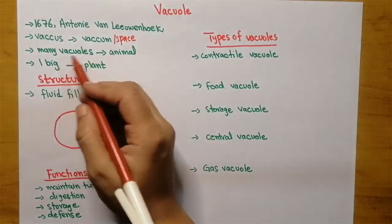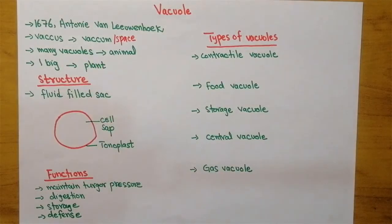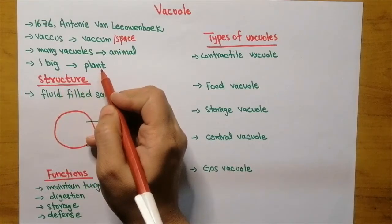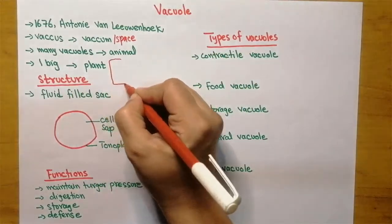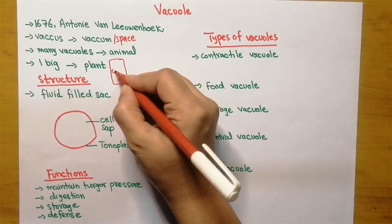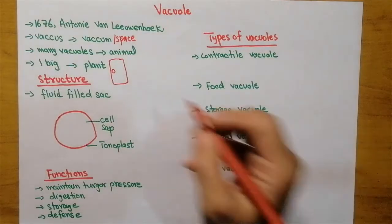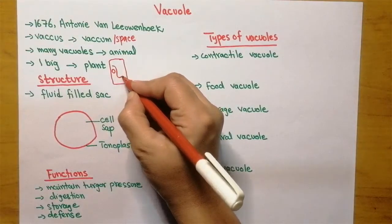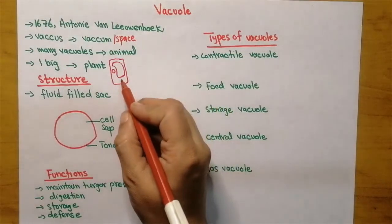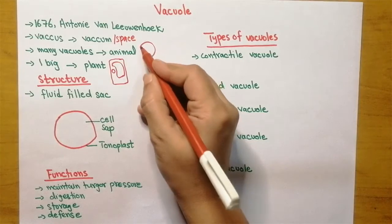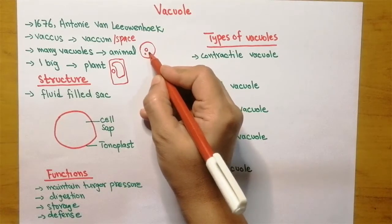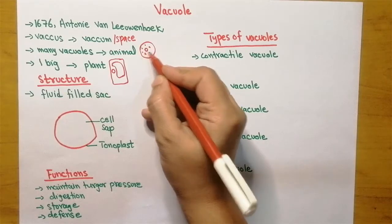In animals many vacuoles are present, while in plants one big vacuole is present. In plant cells, the nucleus is pushed to the side because of one big vacuole, while in animal cells the nucleus is in the middle and many small vacuoles are present.